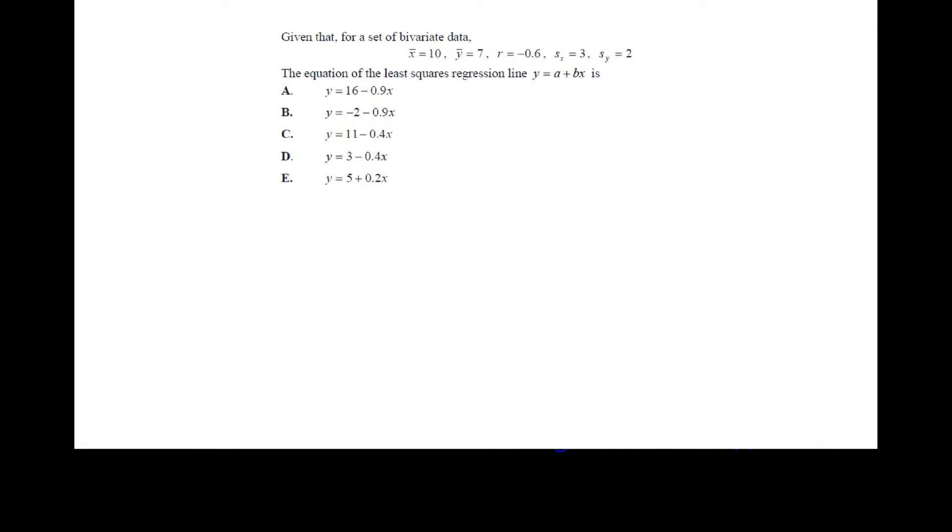Okay this next question is quite common and it often stumps quite a few students. Given that the set of bivariate data we have the mean of x is 10, mean of y is 7, r value of negative 0.6, standard deviation of x is 3, standard deviation of y is 2, the equation of the least squares regression line.